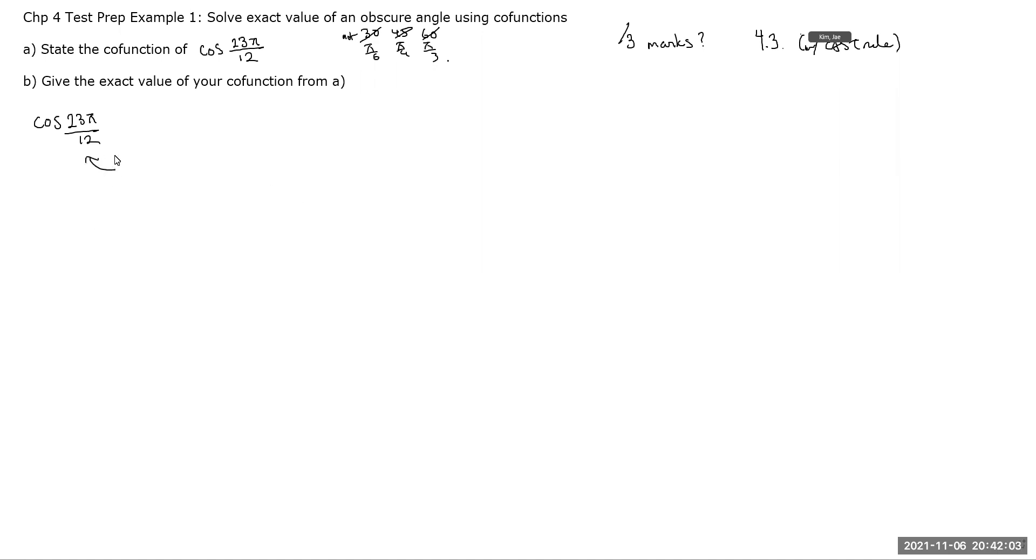So, seeing this, it is just shy of 2π, it is underneath 2π, right, 24π over 12, which means I know that it is going to be in quadrant 4. Knowing that this is in quadrant 4,